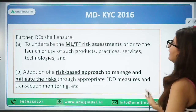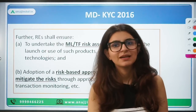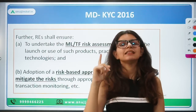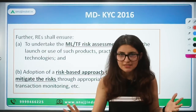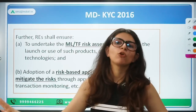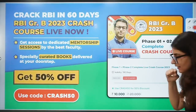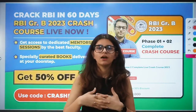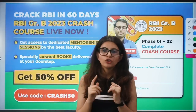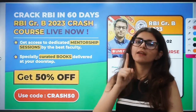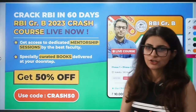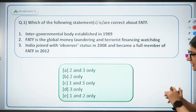This brings us to the end of these guidelines. We have learned the guidelines and amendments. These guidelines are originally 100 pages but we have covered all the important things. A crash course is available if you want to clear the RBI exam in this attempt itself. You can also take the mentorship program, which a lot of students are benefiting from.